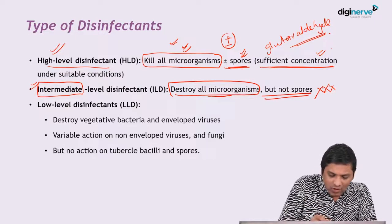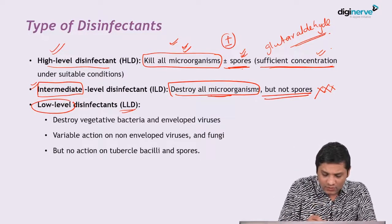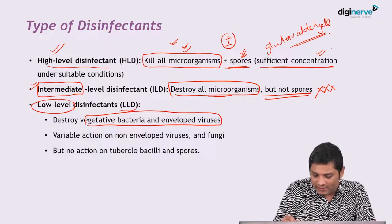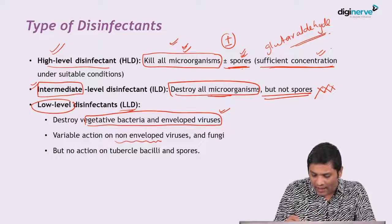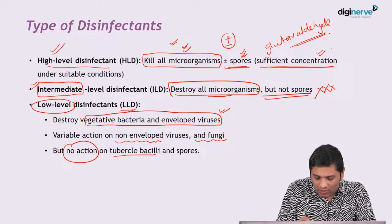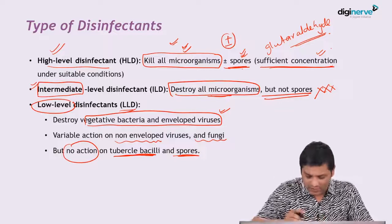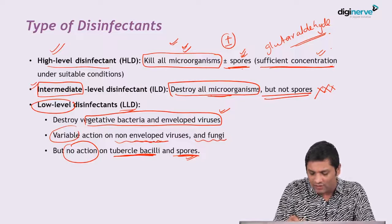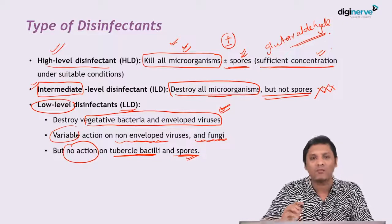Low level disinfectants are applicable to products which can destroy only vegetative bacteria and enveloped viruses, but they have variable action on non-enveloped viruses as well as fungi, and no action at all on tubercle bacilli — that is Mycobacterium tuberculosis — and spores. They cannot kill Mycobacterium tuberculosis or spores, have variable action on non-enveloped viruses and fungi, and will definitely be able to kill vegetative bacteria and enveloped viruses.